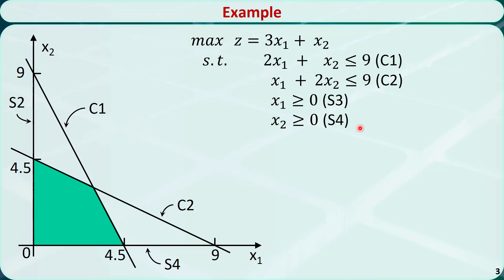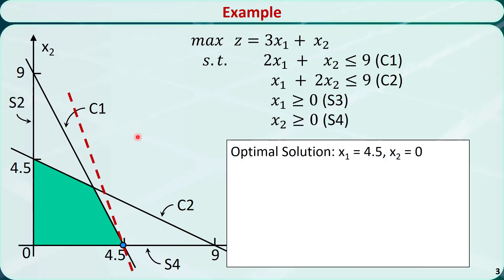Using the graphic method, we can find that the slope of the objective function is negative 3. If we move the line towards the top right corner, this is the last point before leaving the feasible region.